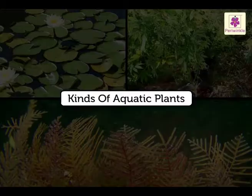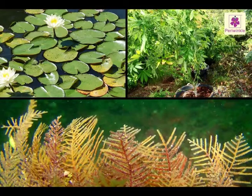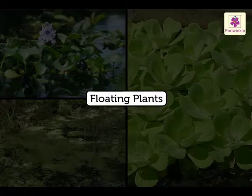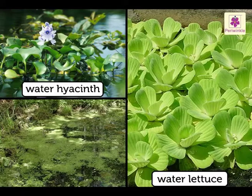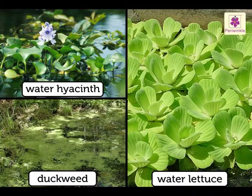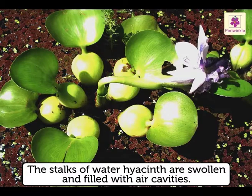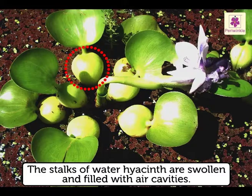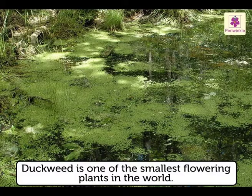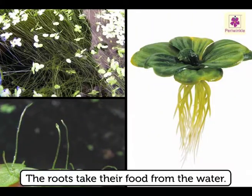Kinds of aquatic plants. Aquatic plants are of three kinds. Floating plants: Water hyacinth, water lettuce and duckweed are found freely floating on water. They are not attached to any surface. The stalks of water hyacinth are swollen and filled with air cavities, which makes the plant very light and fit for floating. Duckweed is one of the smallest flowering plants in the world. It floats easily because of its size, and its roots take their food from water.